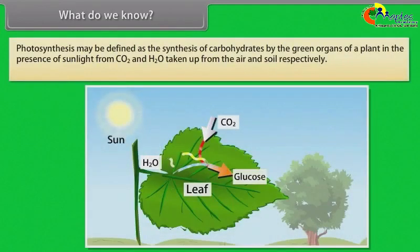Photosynthesis may be defined as the synthesis of carbohydrates by the green organs of a plant in the presence of sunlight from carbon dioxide and water taken up from the air and soil respectively. Let us test a leaf for starch.